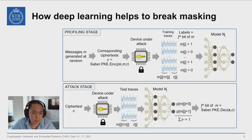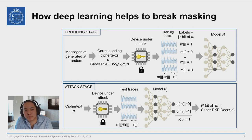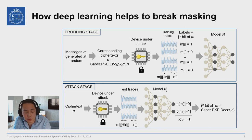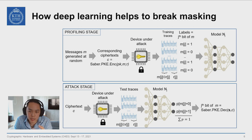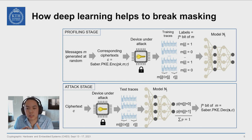Our presented message recovery attack is a profiling attack, which consists of two stages: profiling and attack. During the profiling stage, since we have the public key of the device under attack, we can generate ciphertexts that contain a known message. We then send these to the device and ask it to decrypt, which gives us a set of power traces with known message bits.